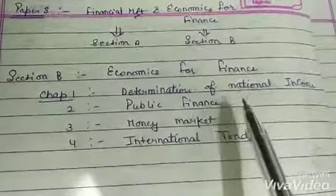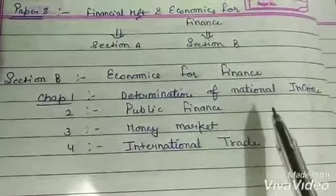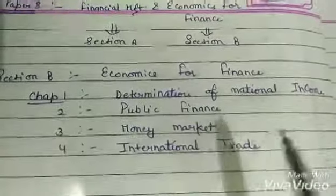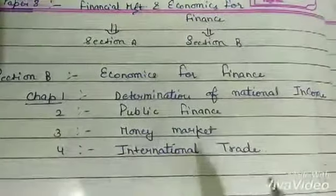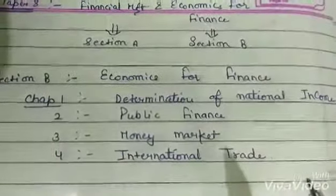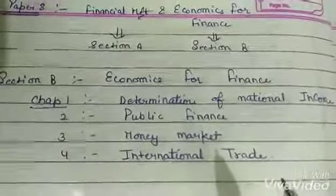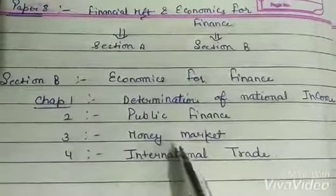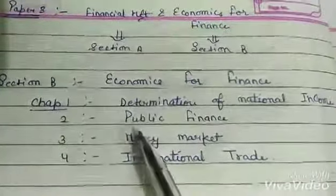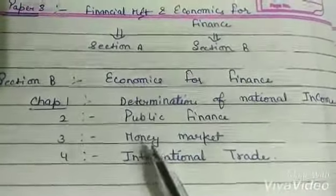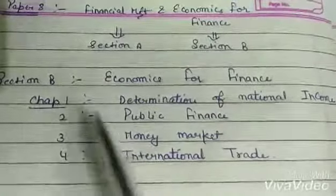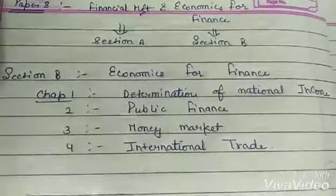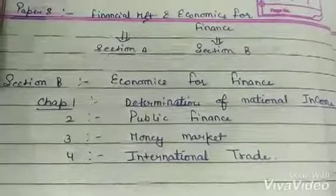The first chapter is the Determination of National Income, the second chapter is Public Finance, the third chapter relates to Money Market, and the fourth one is related to International Trade. So there are only 4 chapters here, but there are many units in each. So first of all, let's look at Chapter 1: Determination of National Income.